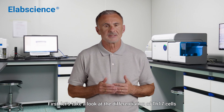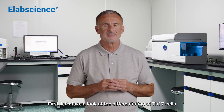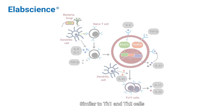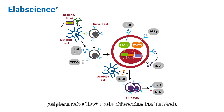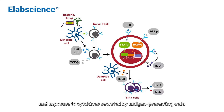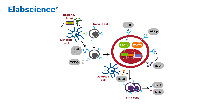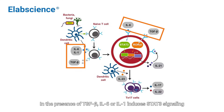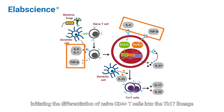Let's take a look at the differentiation of TH17 cells. Similar to TH1 and TH2 cells, peripheral naive CD4+ T cells differentiate into TH17 cells upon stimulation of the T cell receptor by antigens and exposure to cytokines secreted by antigen-presenting cells. In the presence of TGF-beta, IL-6 or IL-1 induces STAT3 signaling and upregulates RORγt, initiating the differentiation of naive CD4+ T cells into the TH17 lineage.